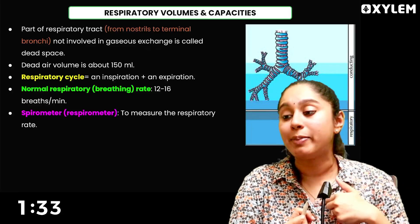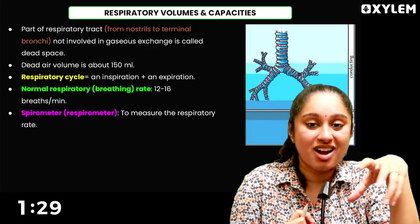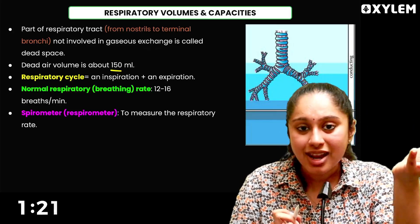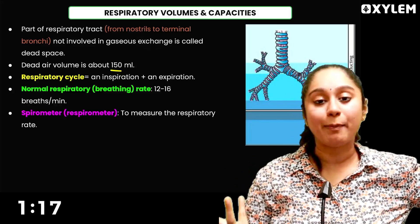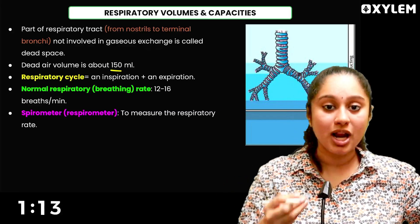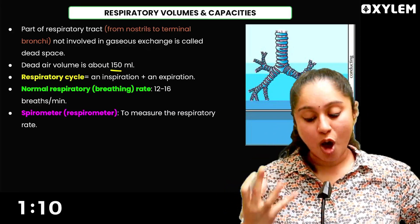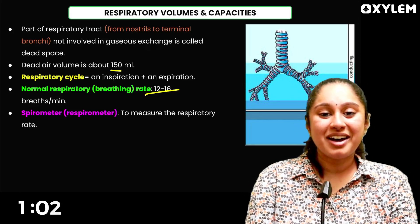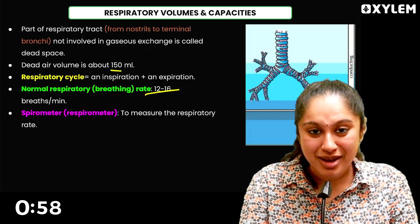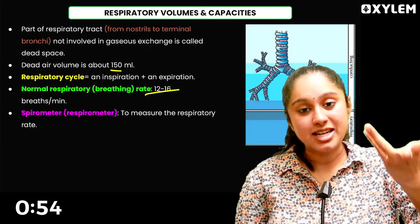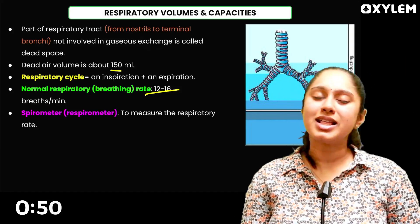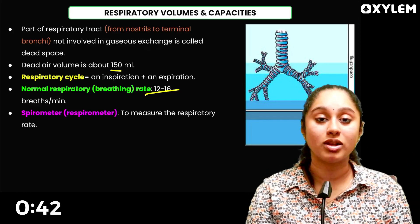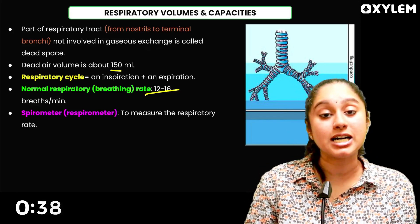Sometimes, there is the concept of dead space — the conducting part of the airway where no gas exchange happens. That is why we call it dead space. The dead space volume is around 150 ml — it is always present in the air pathway and exchange does not happen in that region. Our normal breathing rate is 12 to 16 breaths per minute. When monitoring respiratory rate and volumes, we use a device called the respirometer or spirometer.